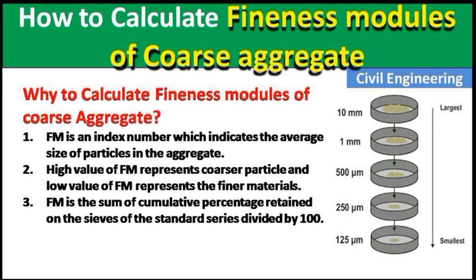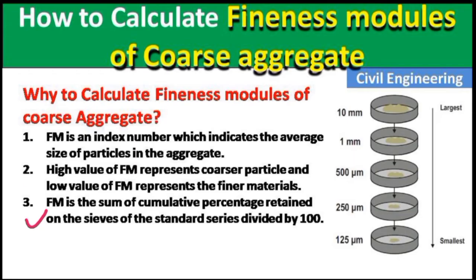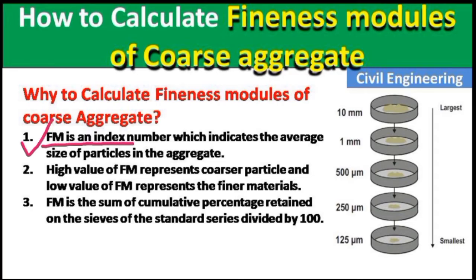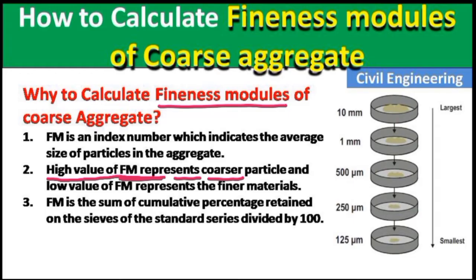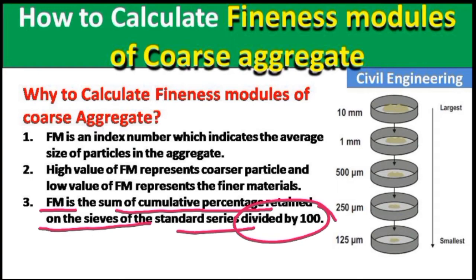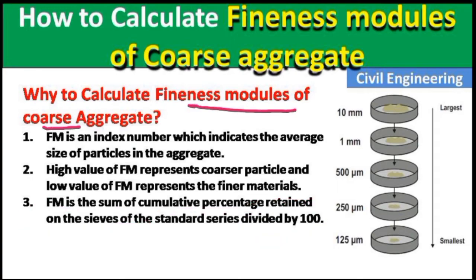First, let us see why we calculate the fineness modulus of coarse aggregate. There are three main points. The first point is that the fineness modulus is an index number which indicates the average size of the particle in an aggregate — there are two types: fine aggregate and coarse aggregate. The second point is that a high value of fineness modulus represents coarser particles and a low value represents finer particles.